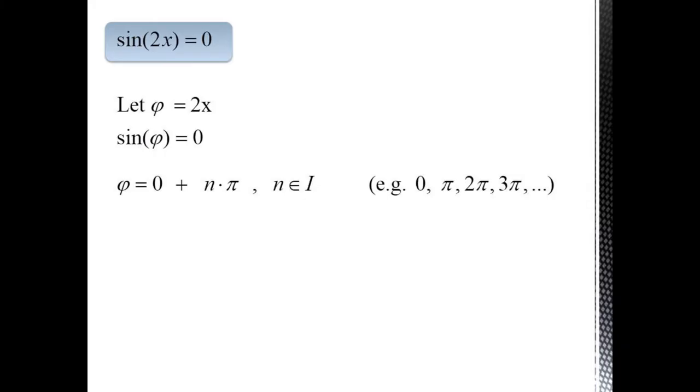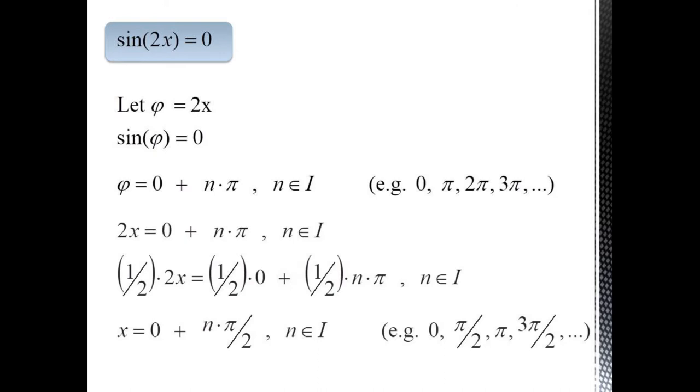However, there's another way to solve this problem that's useful in a number of difficult situations. That is to think about making a substitution, say phi equals 2x. Now we only need to solve the problem sine of phi equals 0. This gives us phi is equal to 0 plus n times pi. Then we can substitute back for phi and get 2x equals 0 plus n pi. And to solve for x, we multiply both sides by 1 half. This gives us x equals 0 plus n times pi over 2, which agrees with our previous result.